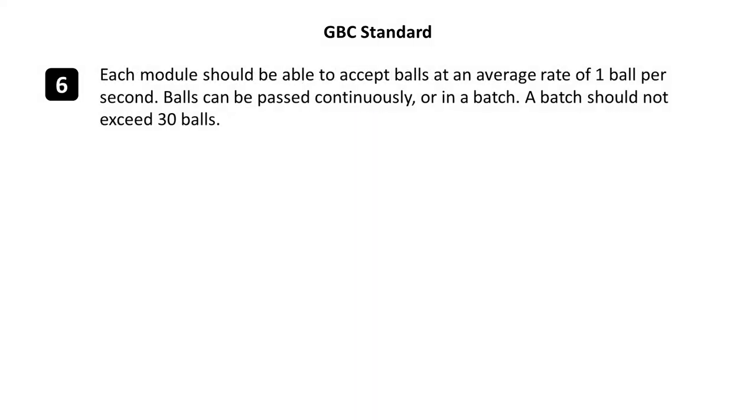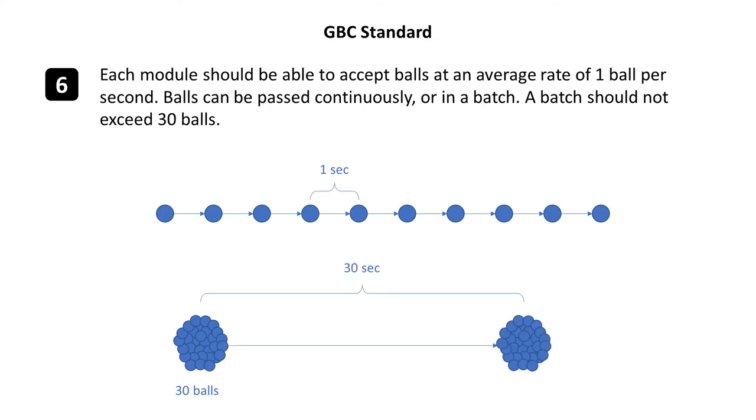Finally, each module should be able to accept balls at an average rate of one ball per second. Balls can be passed continuously or in a batch. A batch should not exceed 30 balls. This means that your input hopper needs to be able to receive up to 30 balls at a time, and if it receives them all at once, it needs to be able to move all those balls out of the hopper within 30 seconds.